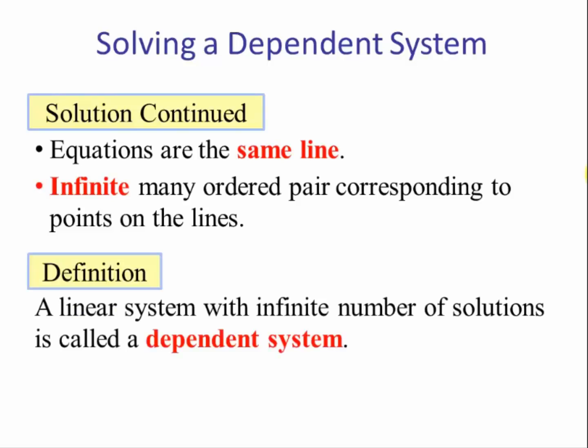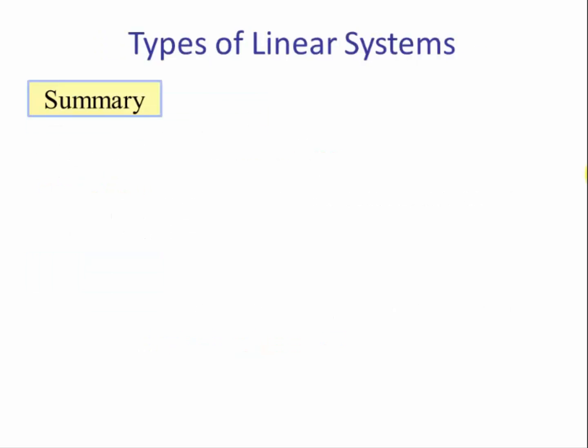Definition: A linear system with an infinite number of solutions is called a dependent system. So let's summarize.